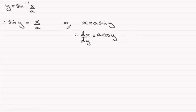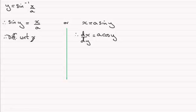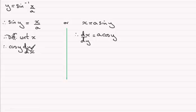The other way we could differentiate this is by implicit differentiation — we differentiate with respect to x. Differentiating sine y with respect to x, we differentiate it with respect to y, which gives cosine y, but we then multiply it by dy by dx. And if we differentiate x over a with respect to x it's just going to be 1 over a.